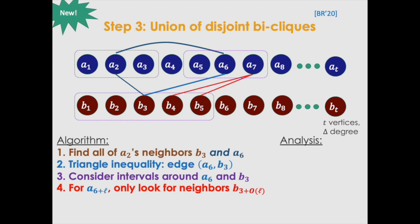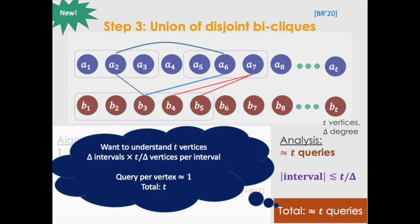So again, let's assume the average degree is delta. So we did here roughly t queries, and we learn an interval of size approximately t over delta.